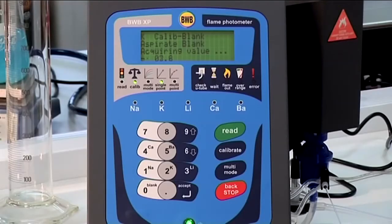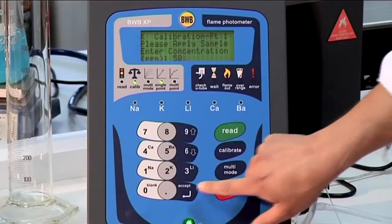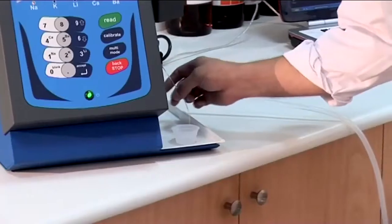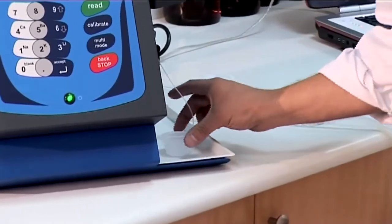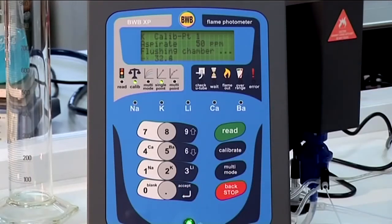When the blank is ready, we are prompted to enter the concentration of the standard. Key in 50 on the BWB XP. Press accept. Press accept again, and the calibration point will be determined.